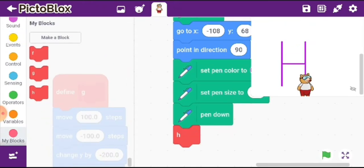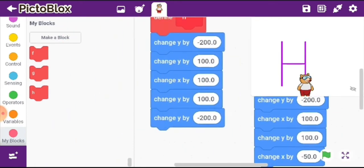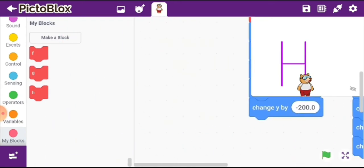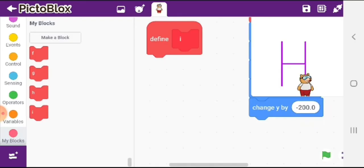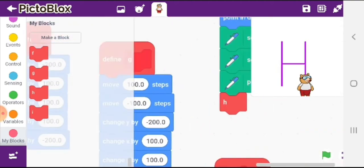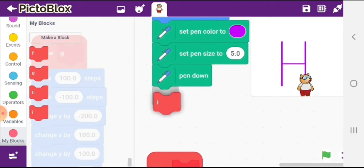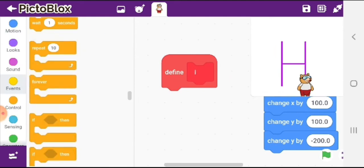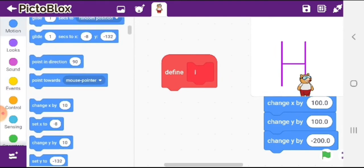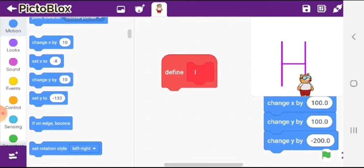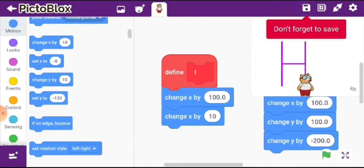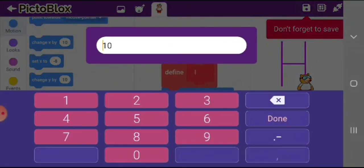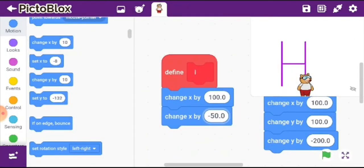I is more easy than H, so we'll make a block I. Let us connect it to the main script. Now what I'll do is use change x and y block. Change x by 100, change x by minus 50, half of 100. Then we'll create a line between which is going horizontally.